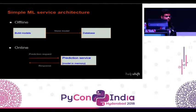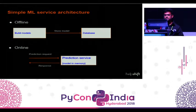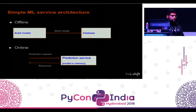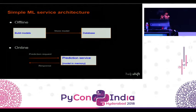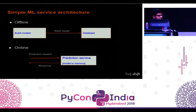If you want to build a platform, the simple architecture is to just build models and push them into some database. The database could be anything — NoSQL, SQL — depending on your model size. In the online phase, you use those models to predict incoming requests. That's the simplest architecture for machine learning.